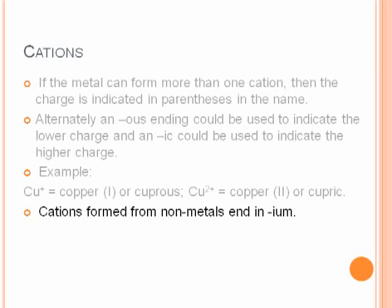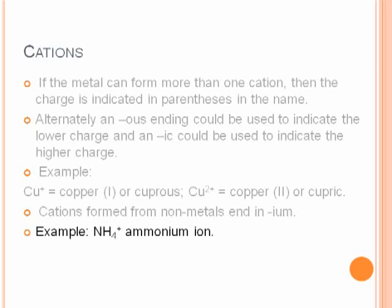Cations formed from nonmetals, that is your polyatomic cation, end in -ium. The main example of that is the ammonium ion, NH4 with a positive one charge. That's the only common cation ion that we'll consider in the formation of an ionic compound.